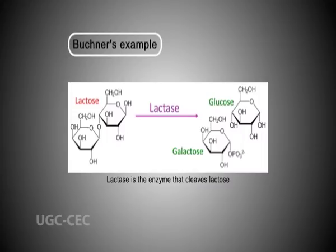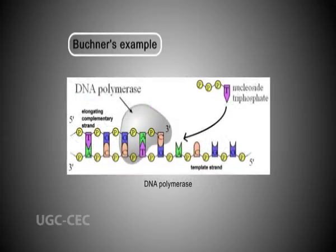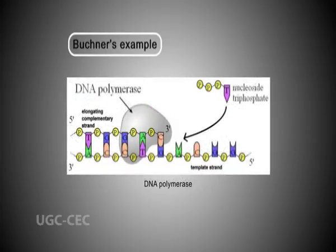Following Buchner's example, enzymes are usually named according to the reactions they carry out, and the suffix -ase is combined with the name of the substrate. For example, lactase is the enzyme that cleaves lactose. Or, named according to the type of reaction — for example, DNA polymerase forms DNA polymers.